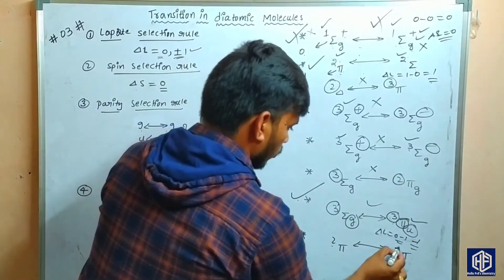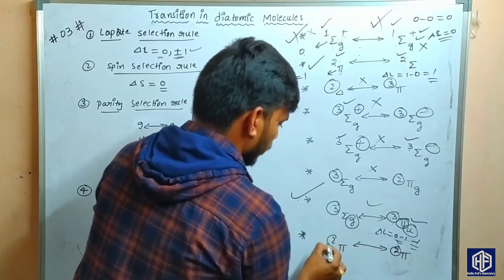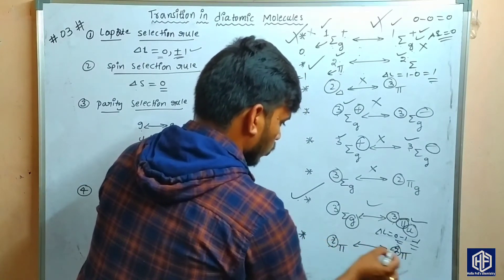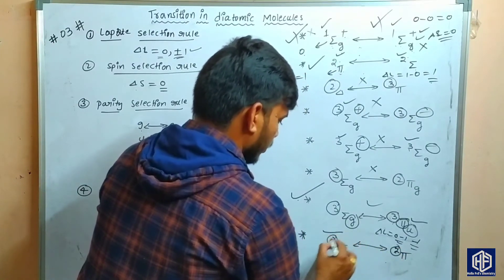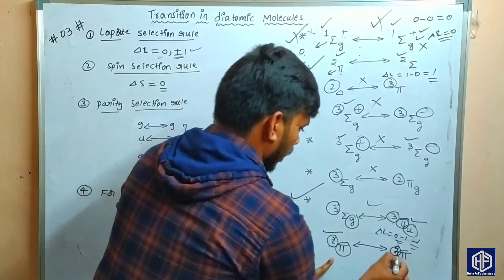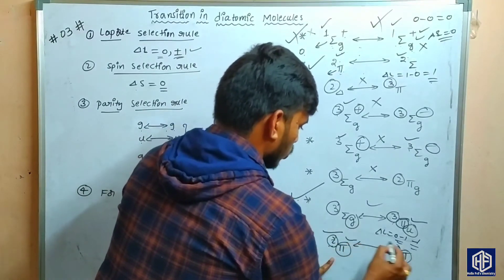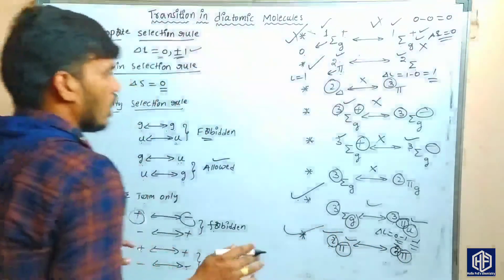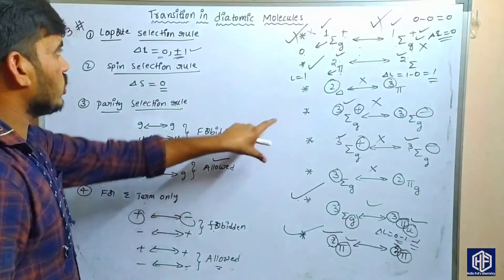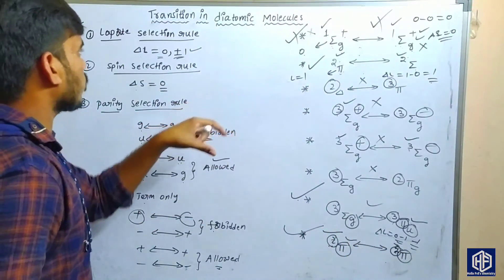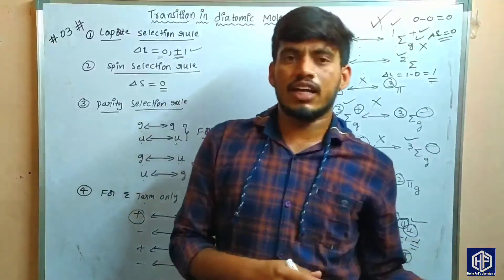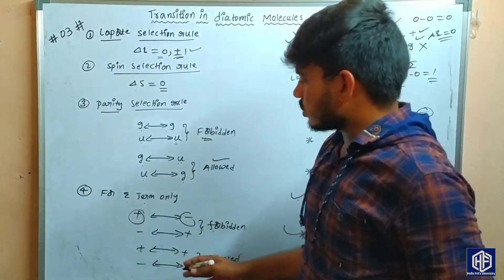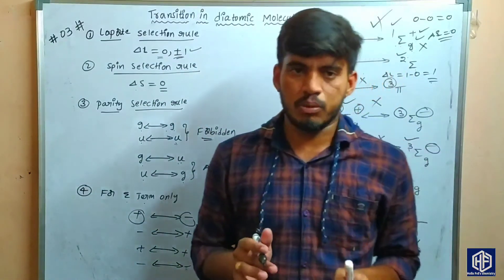Finally, for ²Π to ²Π: the spin multiplicity values are the same, so spin selection is satisfied. Pi-to-pi means delta L equals zero, which also satisfies the Laporte selection rule. Therefore this transition is also allowed. These are the four important selection rules used to determine transitions in diatomic molecules.